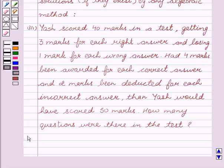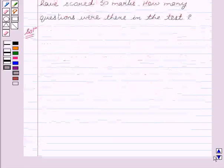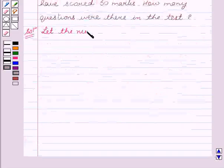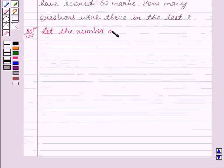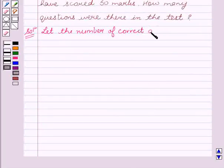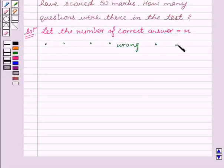Let's start with the solution. Let the number of correct answers be X, and let the number of wrong answers be Y.